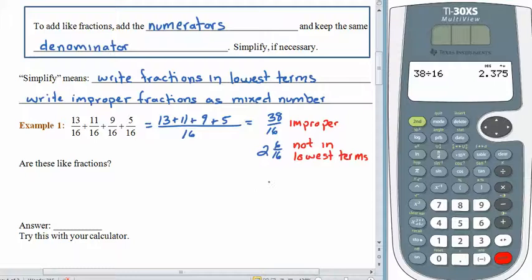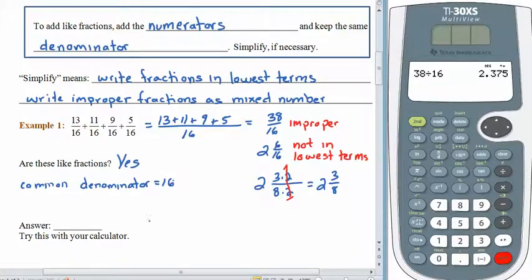We know that 6 is the same as 3 times 2. We know that 16 is the same as 8 times 2. The whole number stays. But then these 2s, 2 over 2 is just 1. And we're left with 2 and 3 eighths. So when we look back at what we did, the first thing we had to do is decide whether or not these fractions were like fractions, which they were. And the common denominator was equal to 16. So our answer here is 2 and 3 eighths.